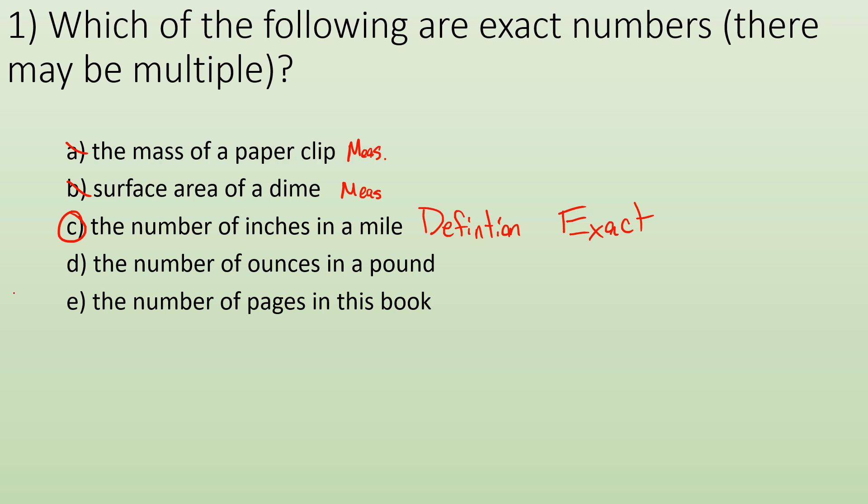There'd be an infinite number of sig figs because it's an exact number. Number of ounces in a pound, same thing. We've defined it so that's exact. Number of pages in the book, well counting numbers are exact. So if you're like how many people are in this room, that's an exact number. So the exact numbers would be choice C, D, and E.